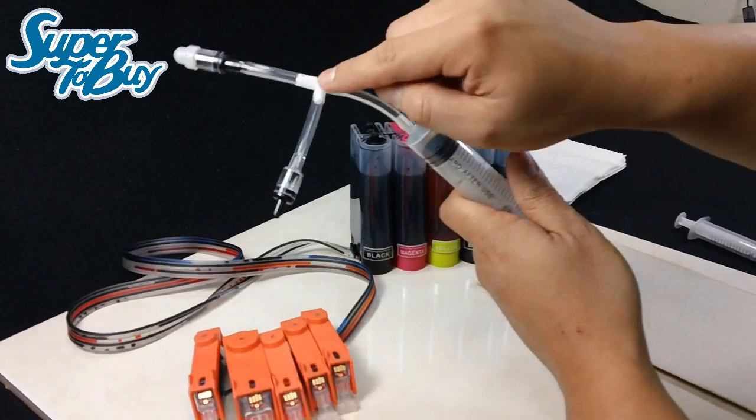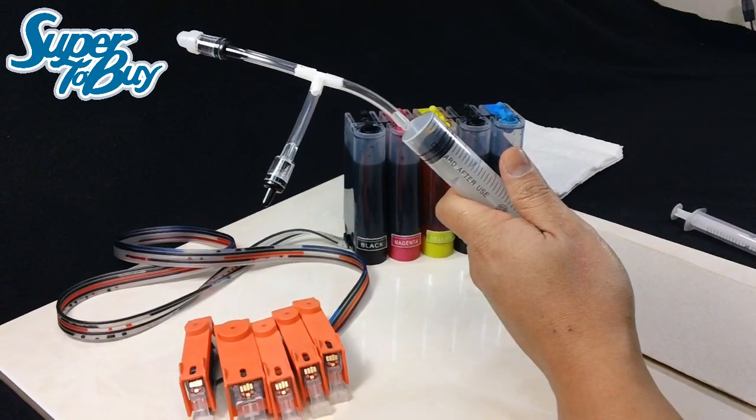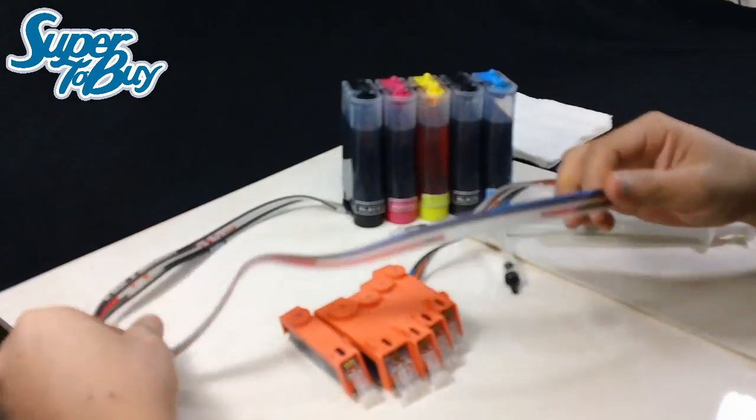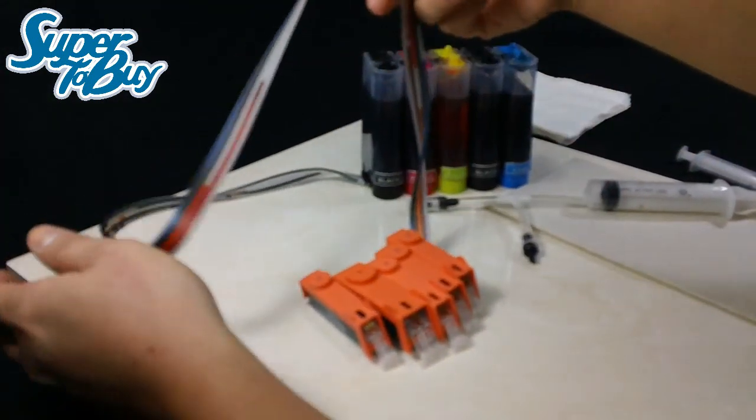That's going to help us prime our system. First, inspect your CIS system and see which color you need to prime. By looking at this, it looks like I have to prime one of the blacks right now.